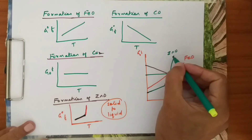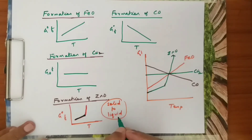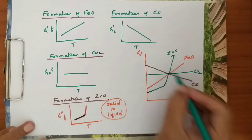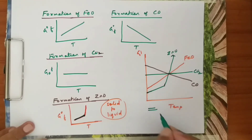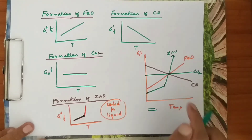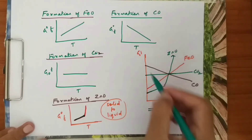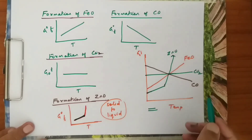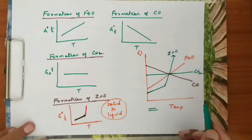These four line types will be present in the Ellingham diagram. This covers the basics of the Ellingham diagram. In the next video we will see how to apply this graph to select the best reducing agent and examine the various observations. Thank you.